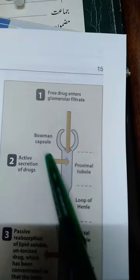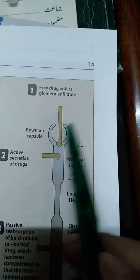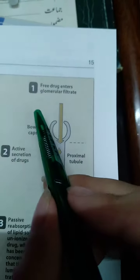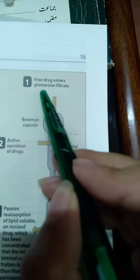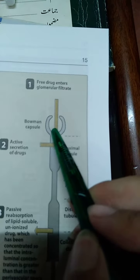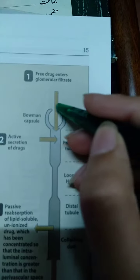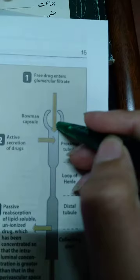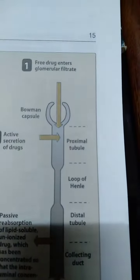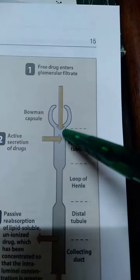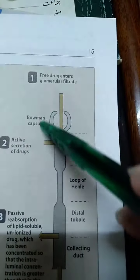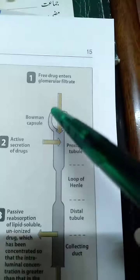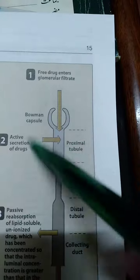The first step is glomerular filtration. If we take a drug, for example folic acid, it will move from the renal artery and enter into the glomerular capillary network. From there it moves into the Bowman's capsule, constituting the glomerular filtrate. The normal glomerular filtration rate is 125 milliliters per minute. The nature of the drug does not affect this process — it is the GFR rate or kidney disease that will affect it.